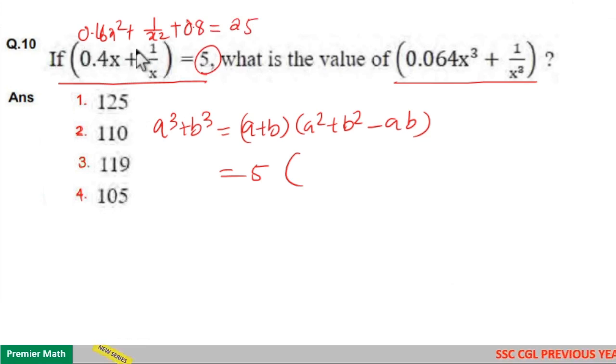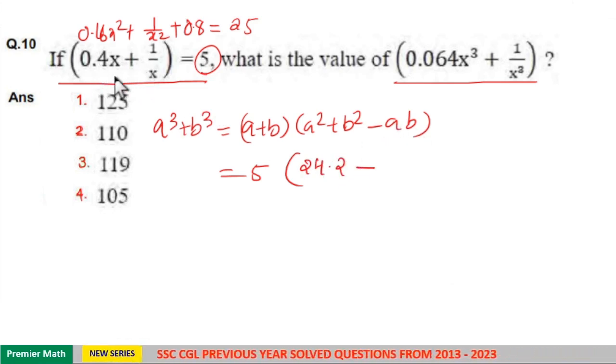So a² + b² = 25 - 0.8 = 24.2. And ab = (0.4x)(1/x) = 0.4.